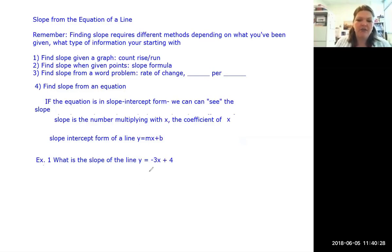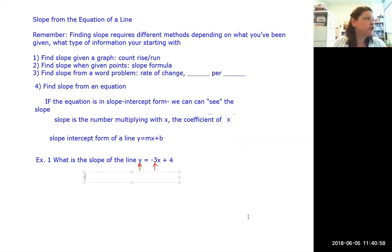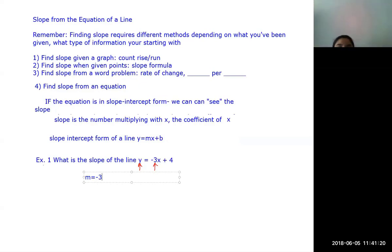GED example one: what is the slope of the line y equals negative 3x plus 4? I can see this is in slope intercept form because y is alone. The slope is always the number shoved up against x. So the slope m equals negative three. That's it — I just write down the coefficient, not the x.